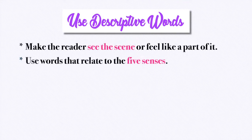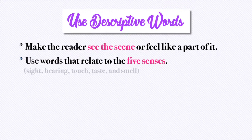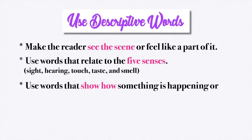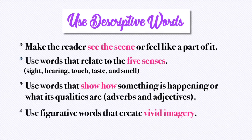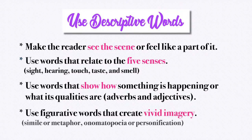And lastly, use descriptive words. Make the reader see the scene or feel like a part of it. Use words that relate to the five senses: sight, hearing, touch, taste, and smell. Use words that show how something is happening or what its qualities are — using adverbs and adjectives. And finally, use figurative words that create vivid imagery: simile or metaphor, onomatopoeia or personification.